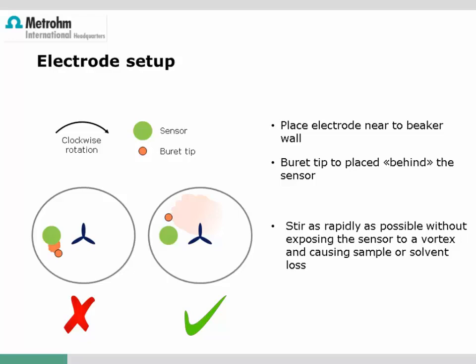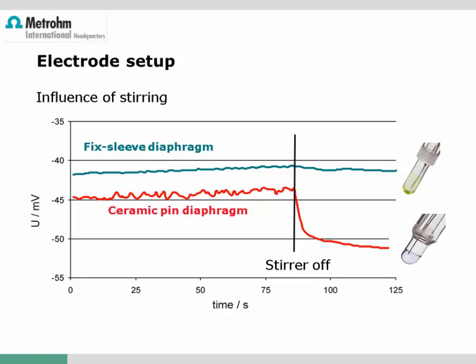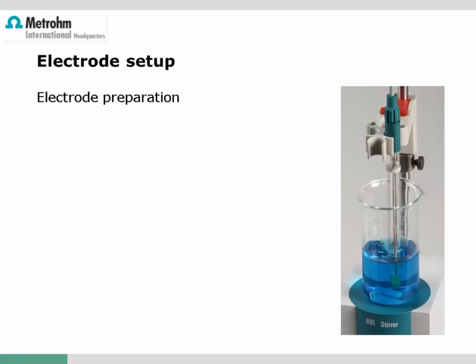Stirring should be as fast as possible, but a vortex should be avoided since the sensor might not remain fully immersed or the sample solution may spill. Beaker and stirrer sizes should be fixed and not changed, otherwise stirring efficiency may vary. The effect of stirring can be shown with a practical example using deionized water: once the stirrer is switched off, a fixed leaf-type electrode provides a stable signal, whereas a significant signal drop is observed for an electrode with a ceramic pin diaphragm. Therefore, we strongly recommend always working at the same stirring speed and using fixed leaf-type electrodes for pH titrations to a fixed endpoint.